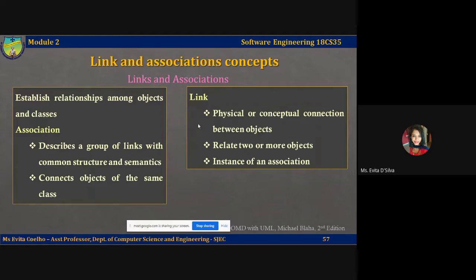We have studied classes and objects. A class is just a generic template or form using which you create specific objects by giving actual values to attributes and defining actual behavior. In the same way, an association is a template — using this association template, you can create specific connections called links. So as associations are to classes, links are to objects. When you connect two classes, the connection is called an association; when you connect objects of those classes, the connection is called a link.